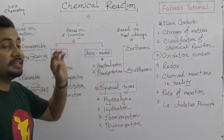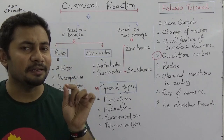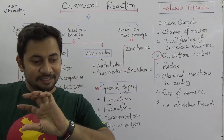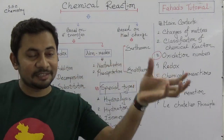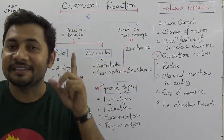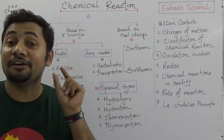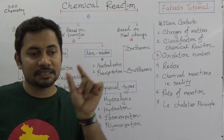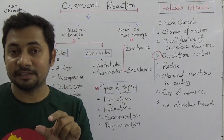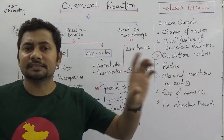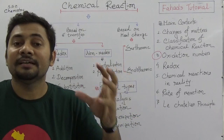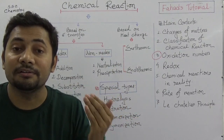Based on electron transfer, this is very important. Either something is releasing electrons and some other part is accepting electrons — if this electron transfer is happening, it is called a redox reaction, meaning reduction and oxidation are both occurring. But in some cases reduction and oxidation are not happening, and that is why it is called a non-redox reaction.